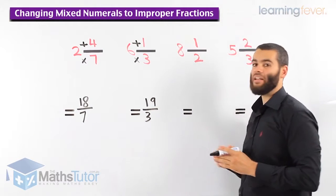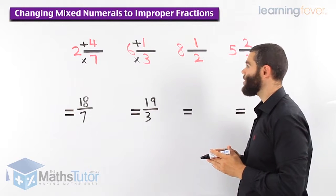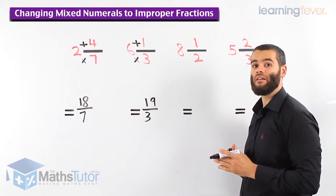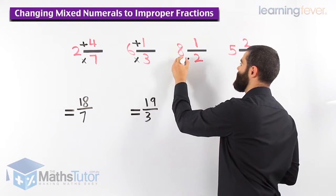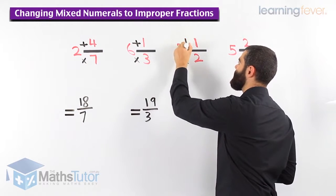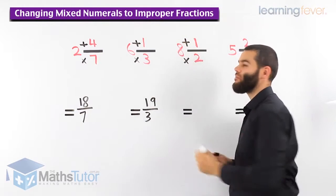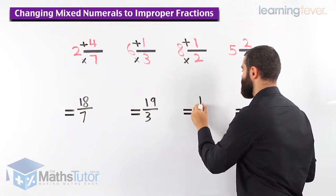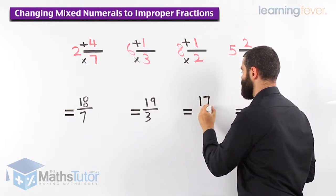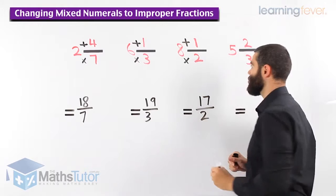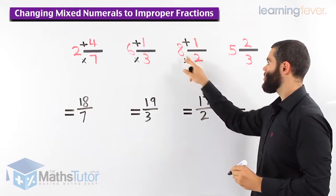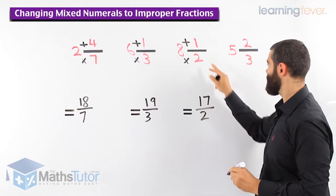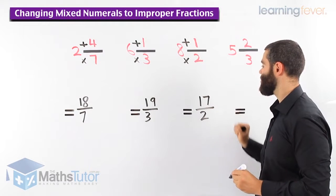8 and a half — what do we do? We start with the denominator, then times, then plus. 2 times 8 is 16. 16 plus 1 is 17, so we get 17 over 2. 2 is our denominator and it stays the same.